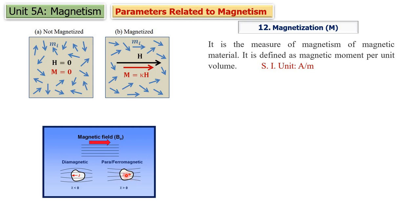So this material gets magnetized — meaning it now possesses magnetic moment. How much magnetic moment is possessed by this material is measured by magnetization. Magnetic moment per unit volume — the magnetic moment produced inside the material per unit volume — is called magnetization. It is the measure of magnetism of a magnetic material, defined as magnetic moment per unit volume.